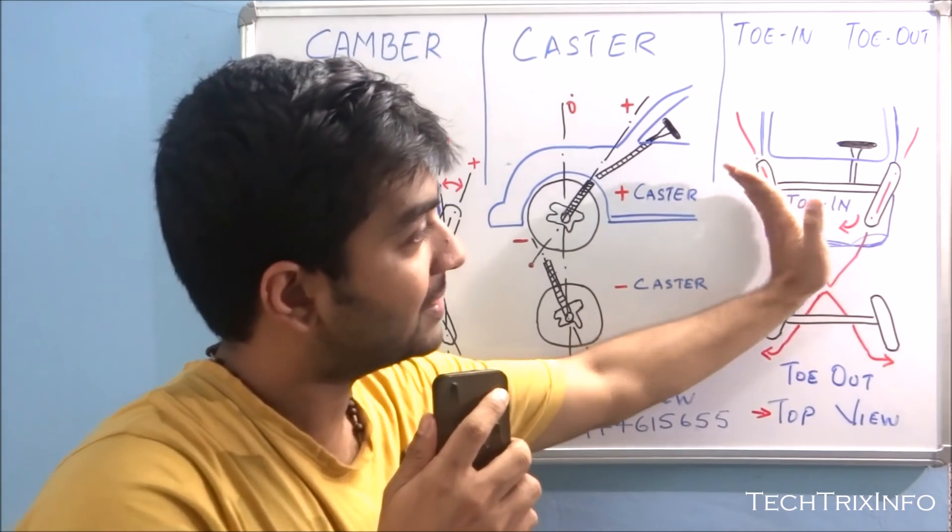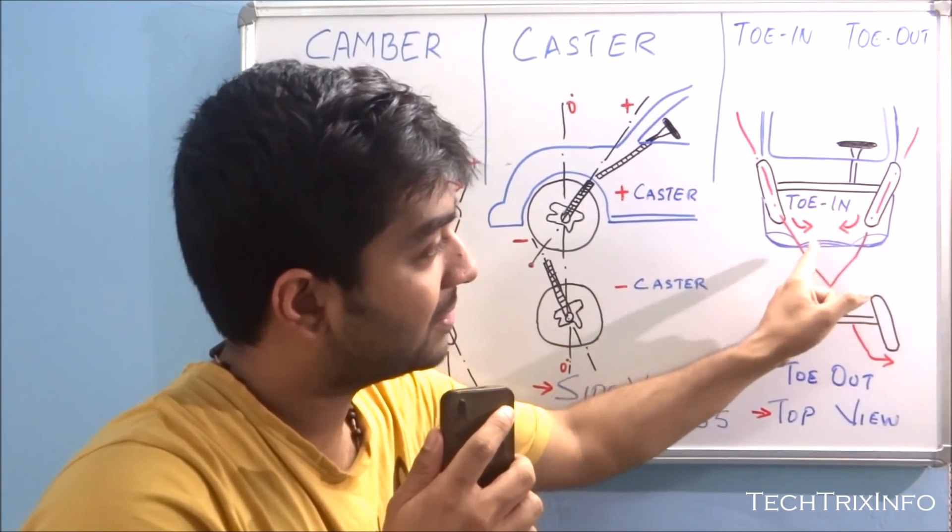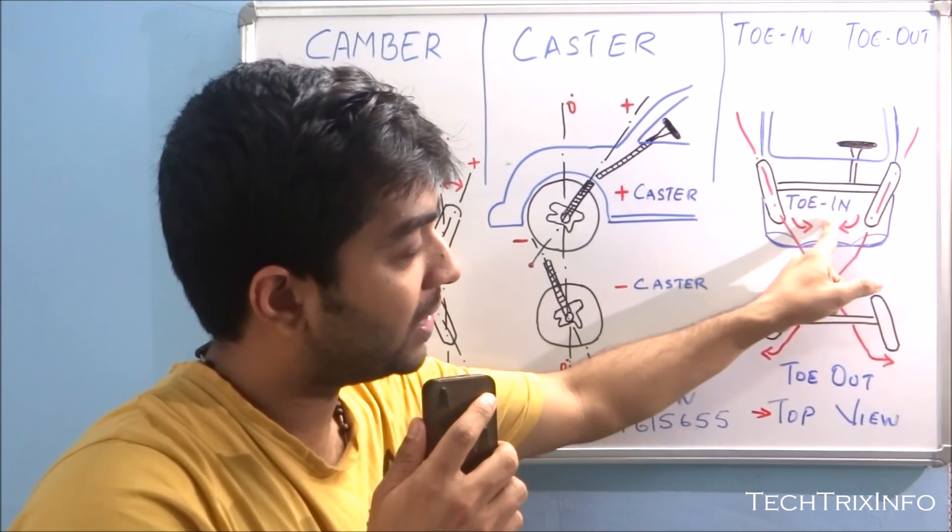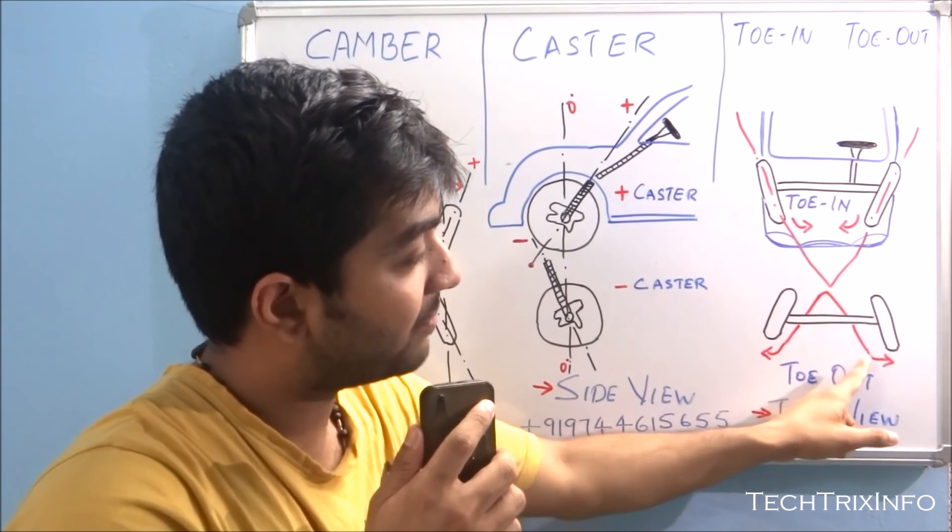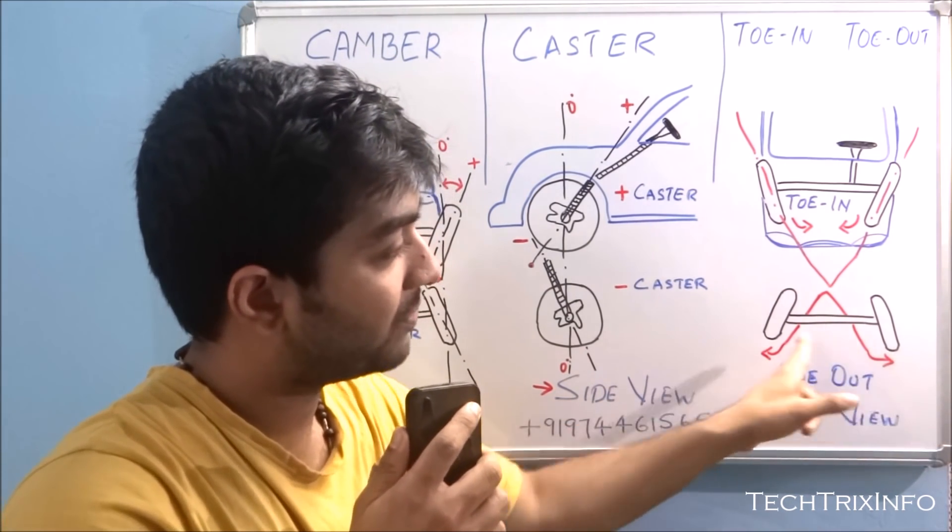So see this front tire of the car is inclined like this facing each other. You can see the arrow. This is toe-in. And when the front tires are facing outwards from each other, this is toe-out.